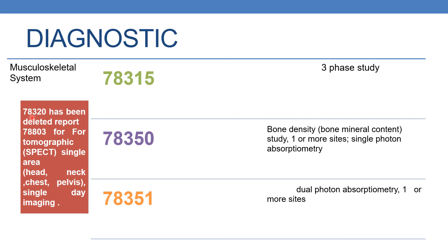Code 78320 has been deleted; in order to report this, you need to code 78803 for tomographic single area — head, neck, chest, pelvis — single day image. The next code is 78350, which deals with bone density study, that is bone mineral content, one or more sites, single photon absorptiometry. Whereas code 78351 deals with dual photon absorptiometry, one or more sites.